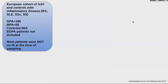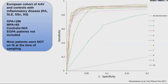This approach comes from a European EUVAS cohort study of 186 GPA and 65 MPA patients with 924 controls with other rheumatological diseases but no ANCA vasculitis, who were not on immunosuppression at sampling. On the ROC curves, all direct antigen testing methods — third-generation ELISA or BioPlex — outperformed immunofluorescence. That's why many labs now just do ANCA testing directly without IF.